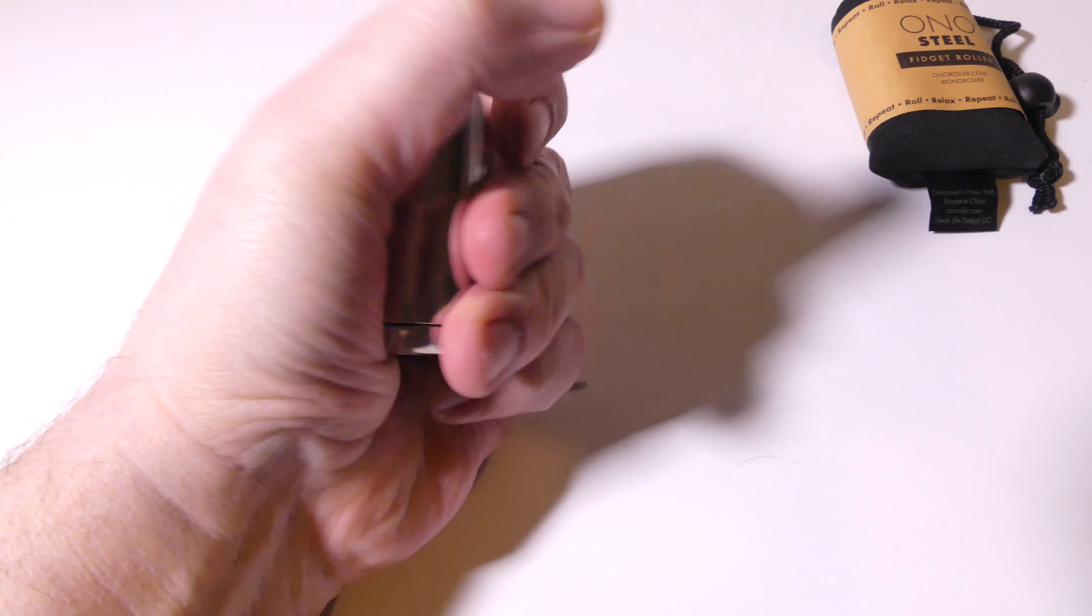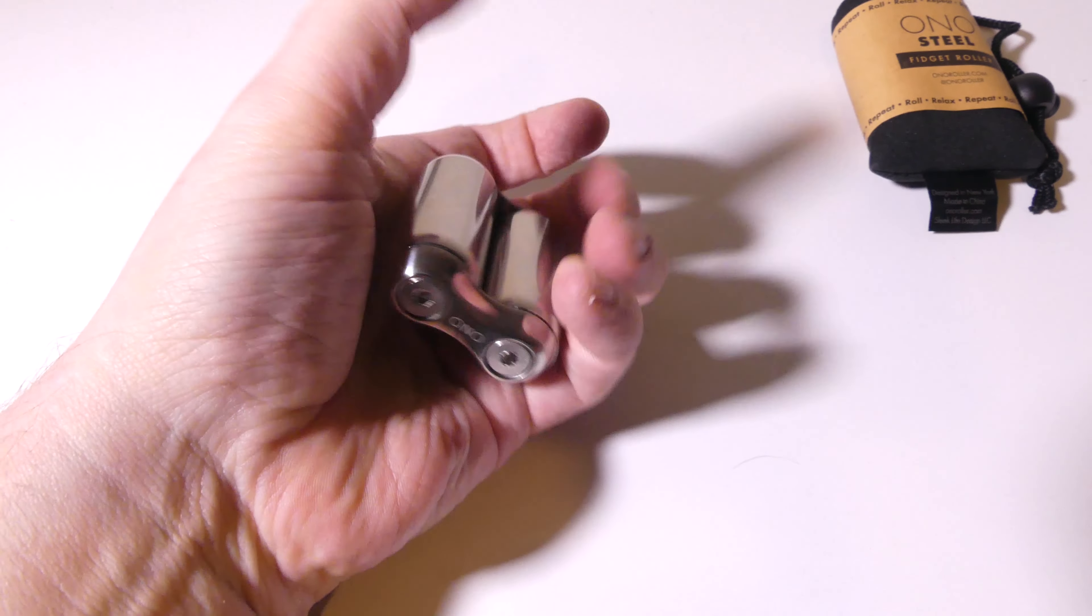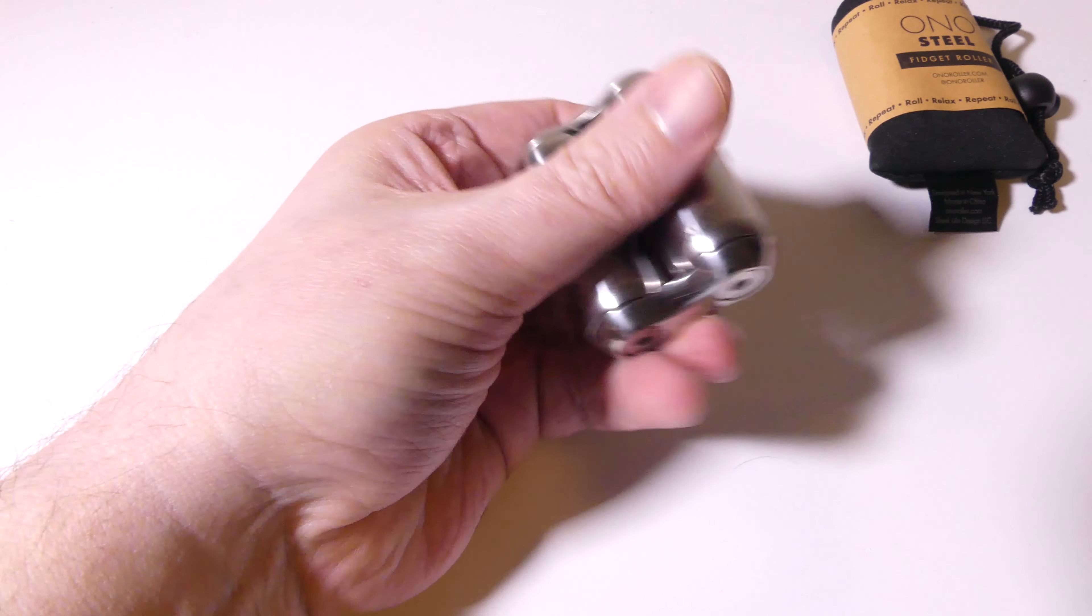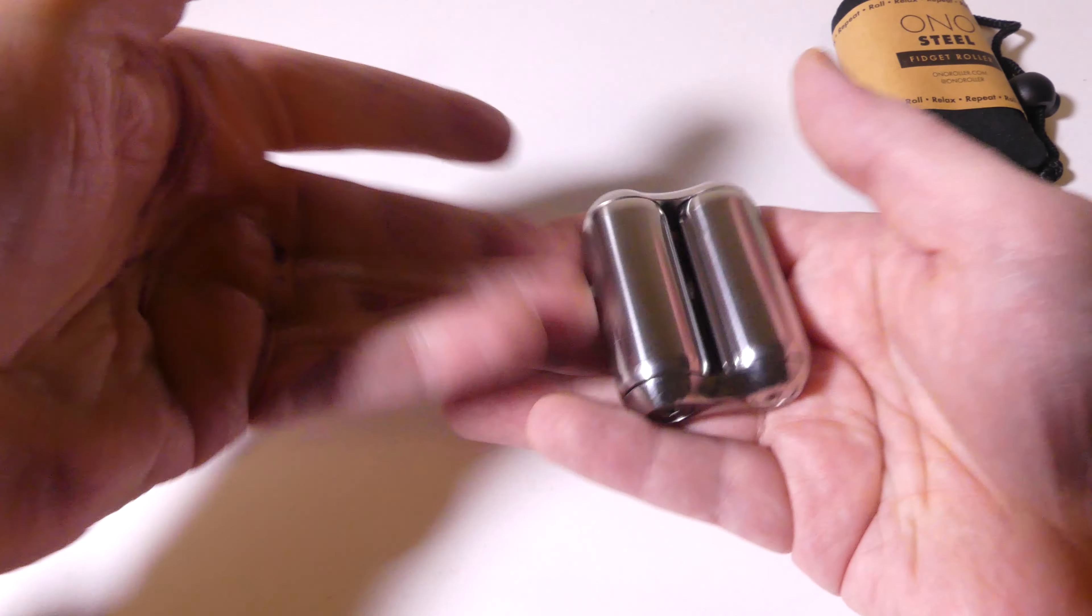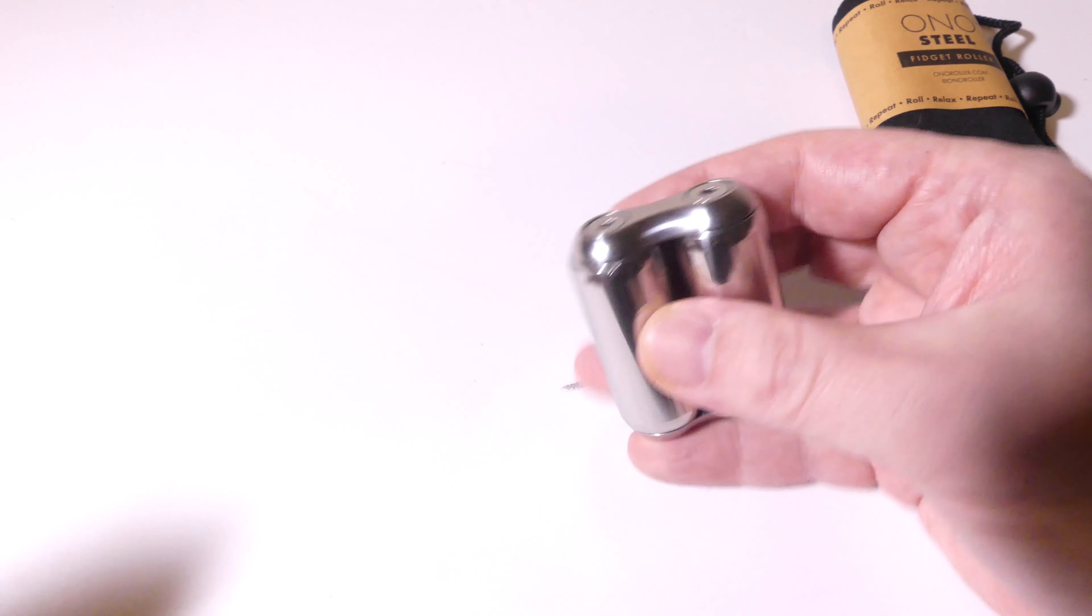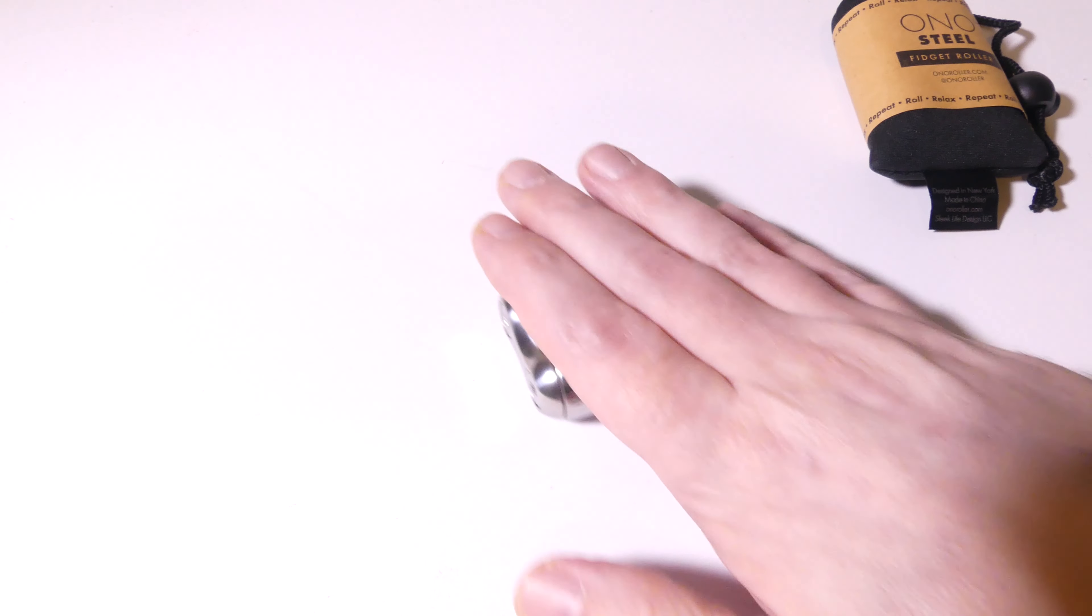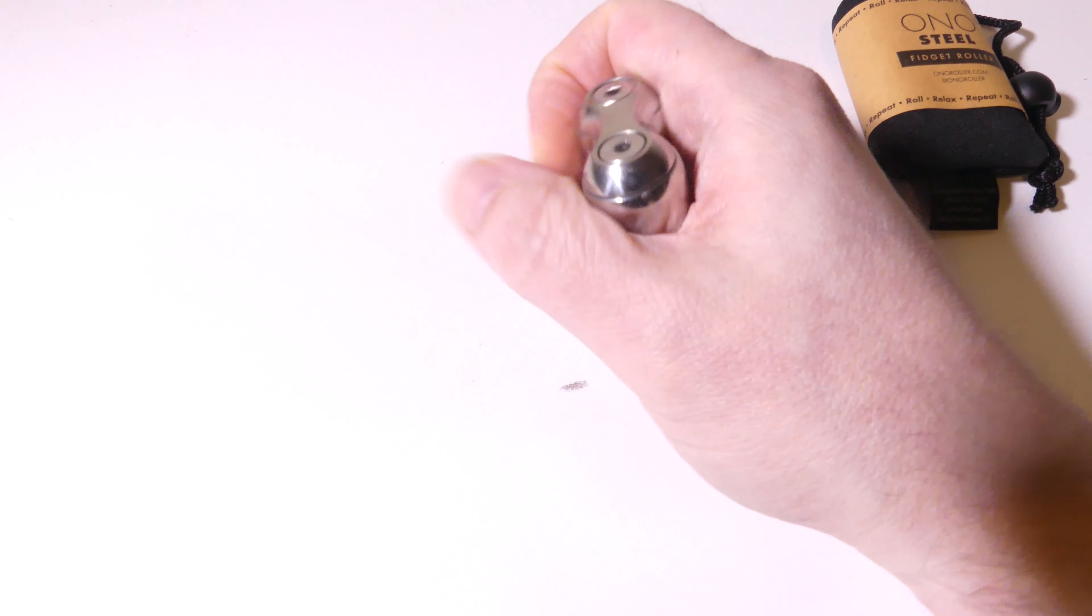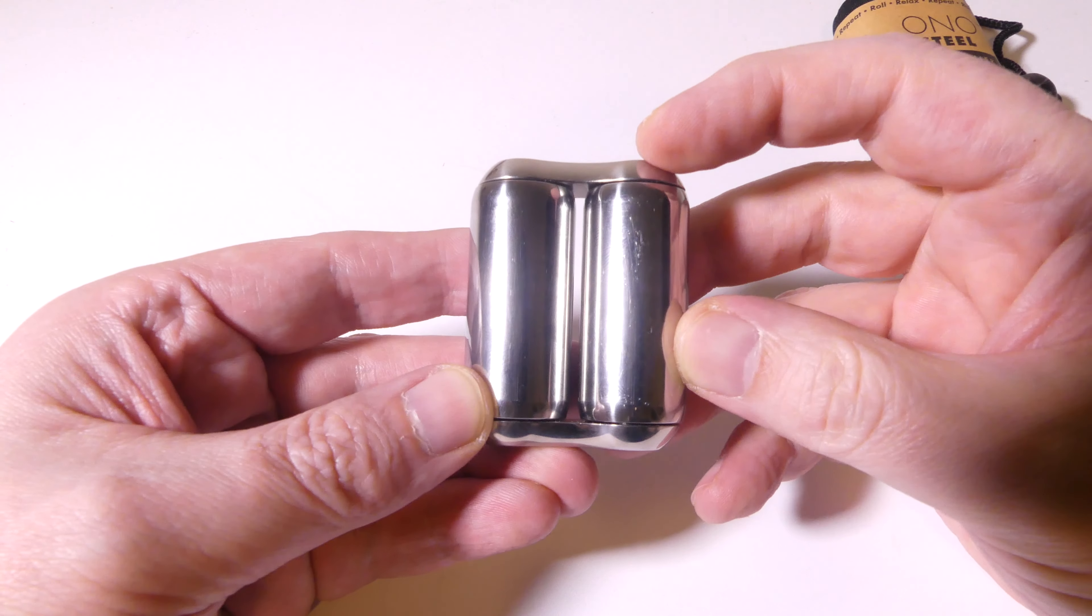And it's smaller, so it's more discreet. It fits more in the palm of your hand, kind of doesn't stick out, and is definitely more compact, allowing you to have this maybe at a meeting at work or something like that, where you don't want to draw a lot of attention to yourself. You can roll this between your hands, you can roll this on the table, or a flat surface, which I find to be really nice as well.